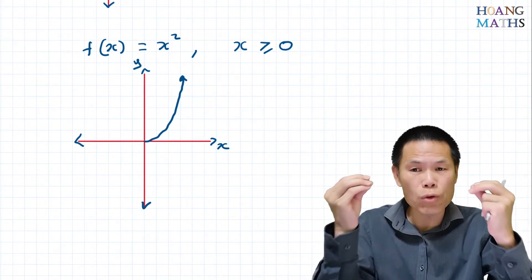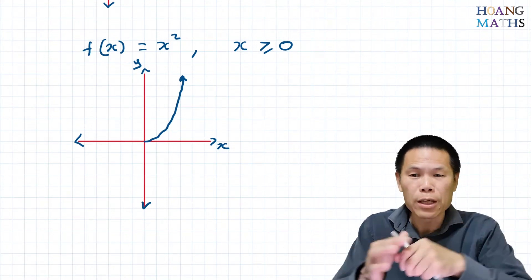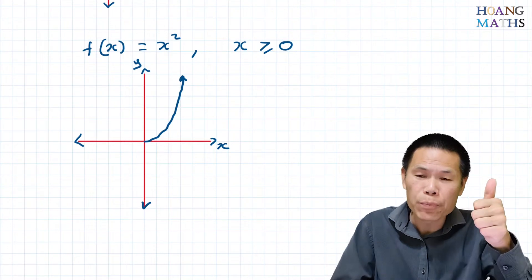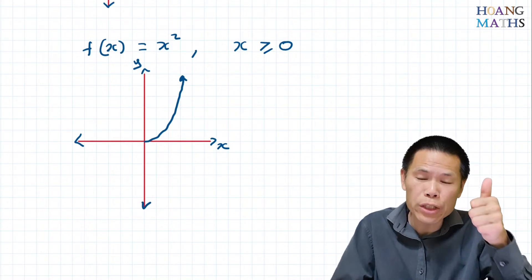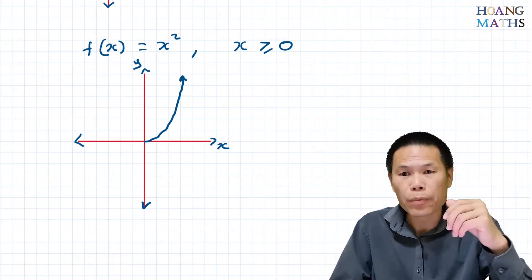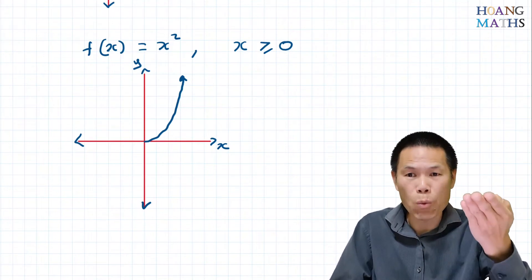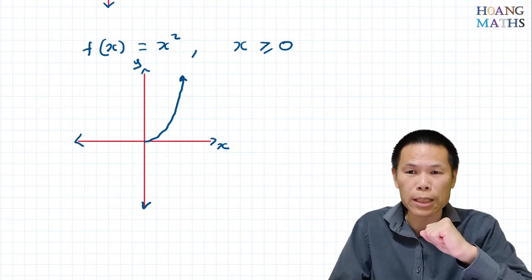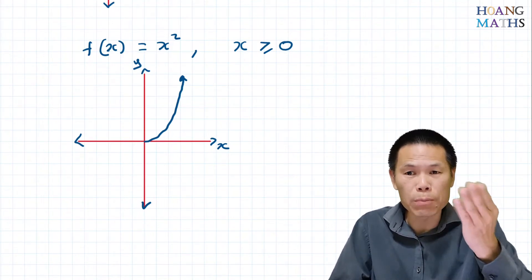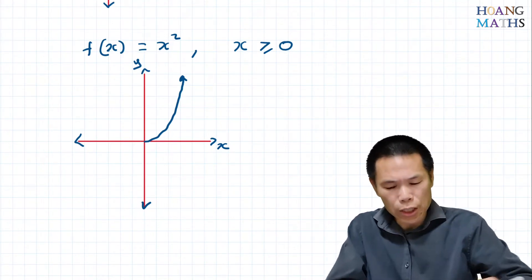To find the inverse function, we follow two steps. Step one: interchange x and y. Step two: make y the subject. That gives us the inverse function.